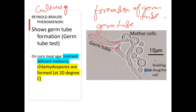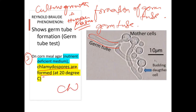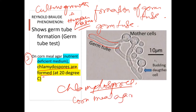Germ tube formation occurs when the culture growth is put in human plasma — that is when Reynolds-Broad phenomenon is demonstrated. On cornmeal agar, which is a nutrient-deficient medium, Candida albicans forms chlamydospores. So the two key features to remember for Candida are germ tube formation and chlamydospore formation.